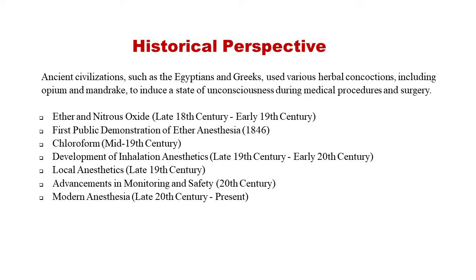In the late 18th century, diethyl ether, commonly known as ether, was discovered and experimented with as a potential anesthetic agent. In the early 19th century, nitrous oxide, or laughing gas, gained popularity as a recreational drug and was later recognized for its anesthetic properties. In 1846, a historic milestone occurred with the first public demonstration of ether anesthesia. On October 1846, in Boston, Massachusetts, dentist William T.G. Morton performed the first public demonstration of ether anesthesia during surgery at Massachusetts General Hospital, marking a significant milestone in the history of anesthesia.